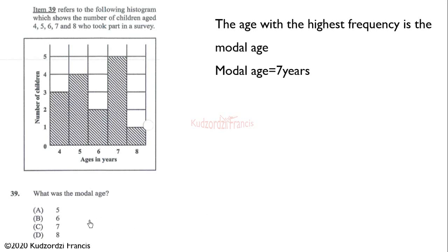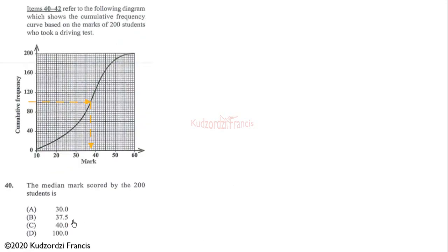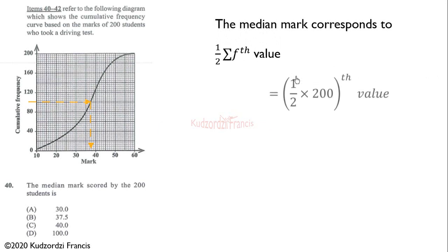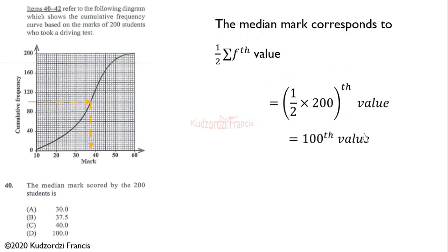Question 40 refers to a cumulative frequency curve based on the marks of 200 students who took a driving test. We need to find the median mark. To determine the median, we find half of the total frequency: half of 200 is 100. So we trace the value of 100 on the cumulative frequency axis — noting each interval represents 20 — giving us 20, 40, 60, 80, 100.